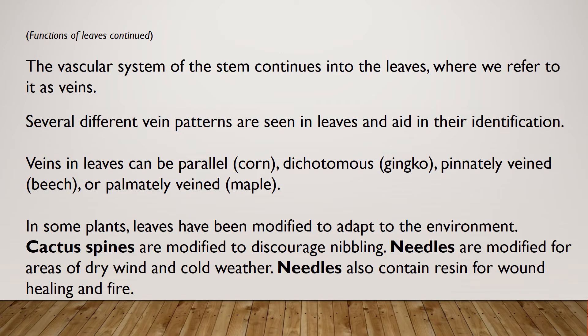The vascular system of the stem continues into the leaves, where we refer to it as veins. Several different vein patterns are seen in leaves and aid in their identification. Veins in leaves can be parallel, such as in corn; dichotomous, such as in the ginkgo tree; pinnately veined, as in the beech tree; or palmately veined, as in a maple tree.